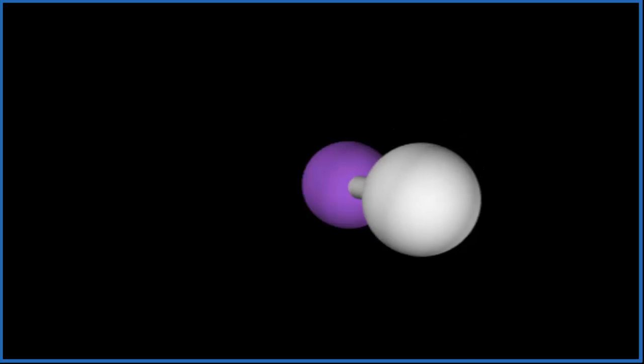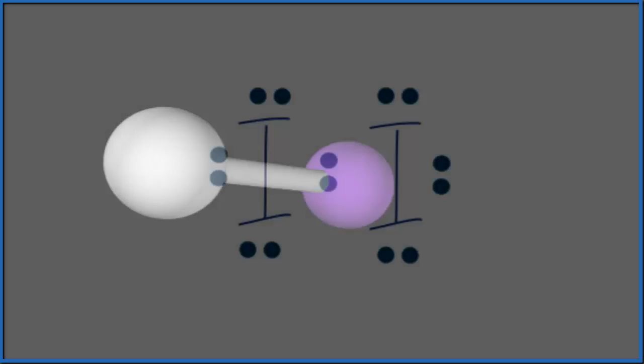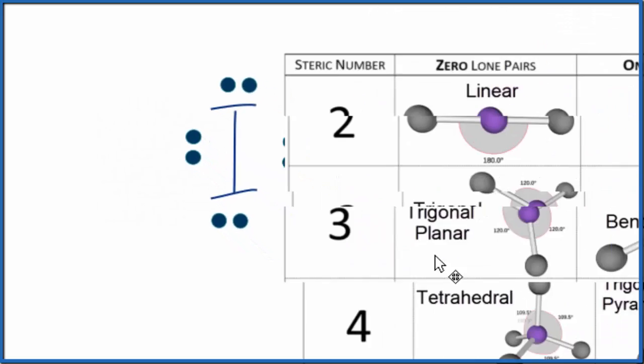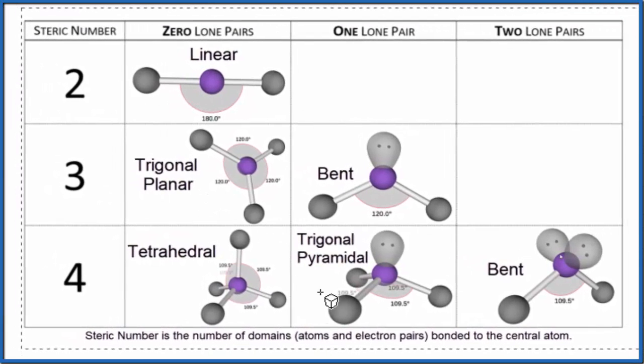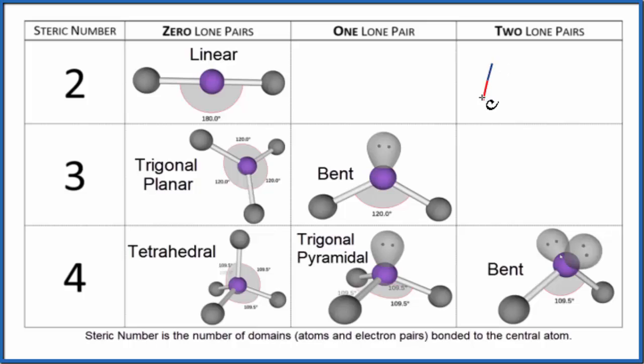Let's go back to our Lewis structure. For more complex molecules, it gets a little more difficult. You can either use a chart, working with steric number, or you can use what's called the AXE notation. There are links at the end of this video for how to do that.